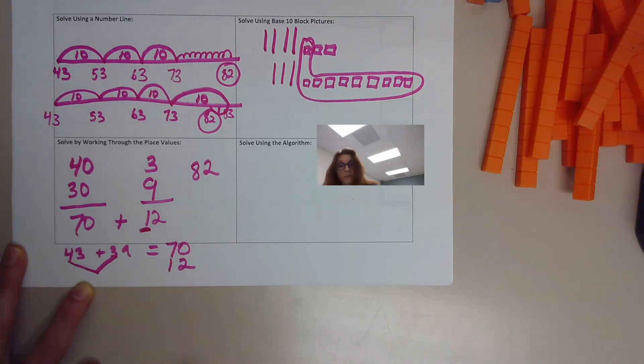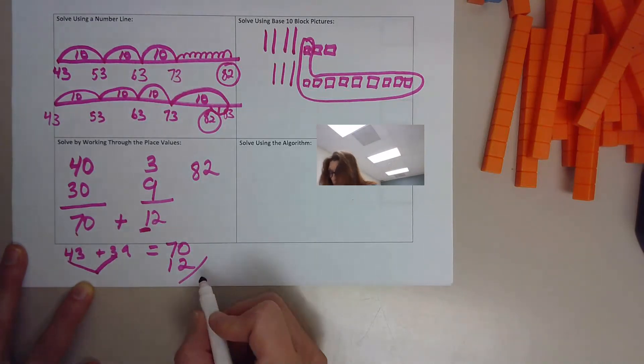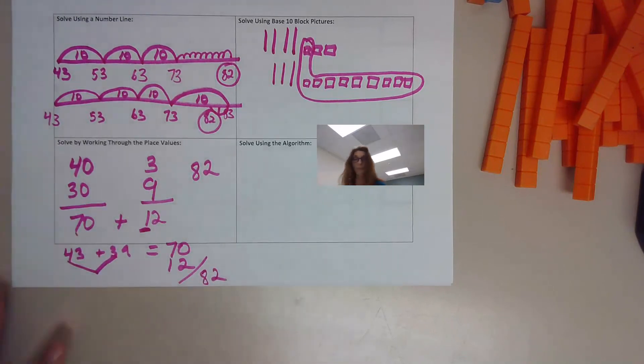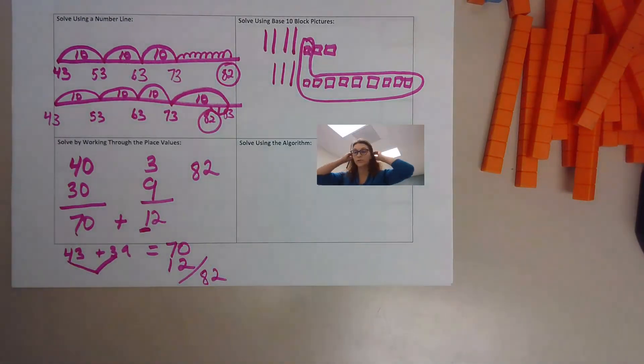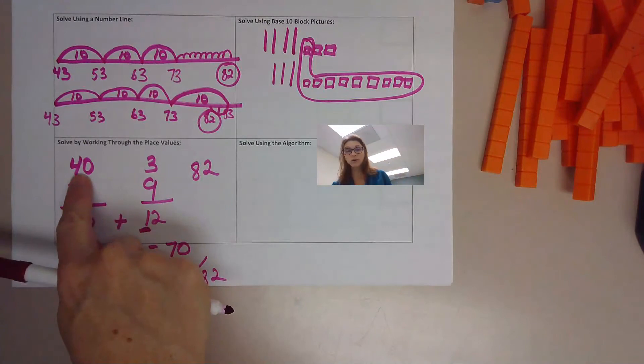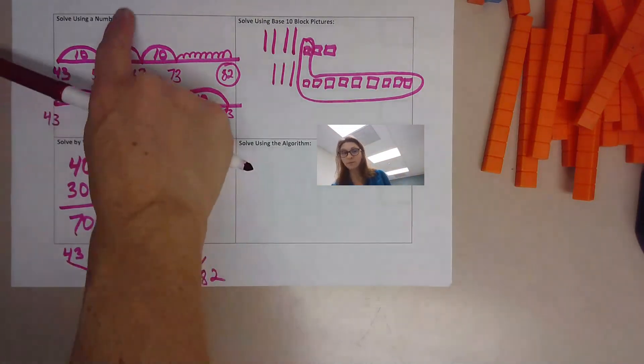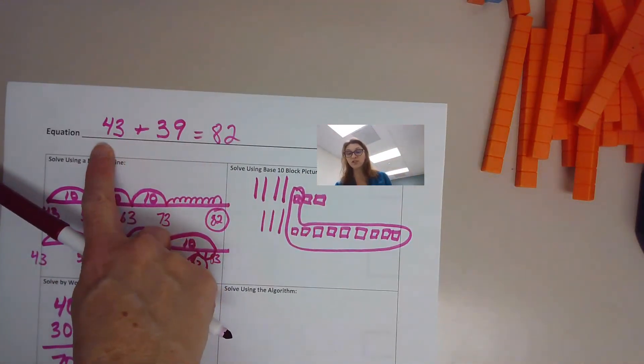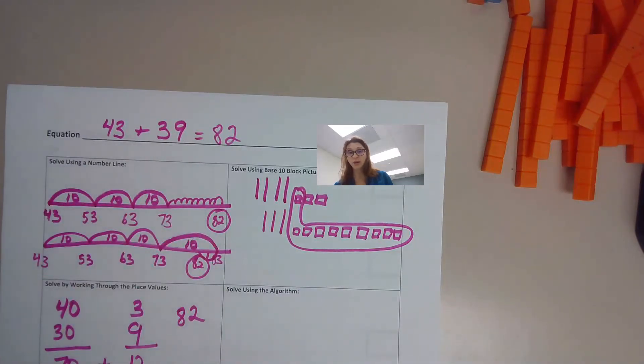Three plus nine is 12. You need to line that up so it's proper. Put your place values properly. When you add those together, sorry, that's on an angle, you get 82. A couple of ways you can do to work through the place values. As long as you're showing me that you understand what each number, pardon me, each digit is worth and you're combining that. Okay.